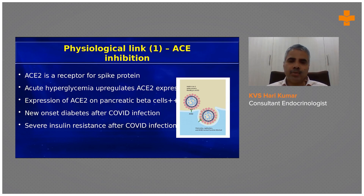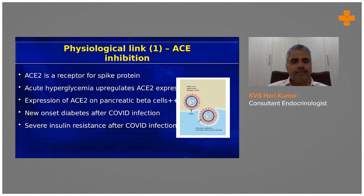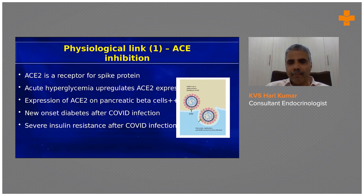ACE2 upregulation also affects pancreatic beta cells, which produce insulin. Increased ACE2 on beta cells enhances viral penetration into them, leading to direct beta cell damage. There are now many reports of new-onset diabetes after COVID infection and severe insulin resistance post-COVID. Some reports have also linked this to vaccines, with increased incidence of these conditions.